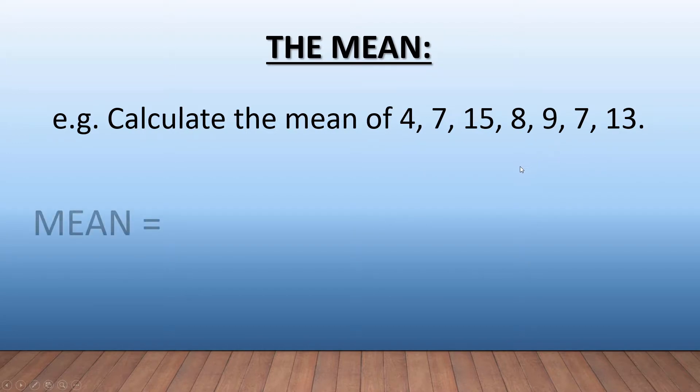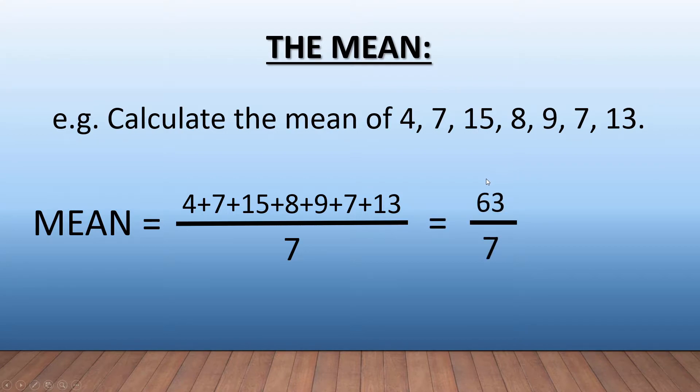So to get the mean, what are we going to do? We're going to take those numbers and we are going to add them together and then divide them by seven. Why? Because one, two, three, four, five, six, seven—the number of values in that set.